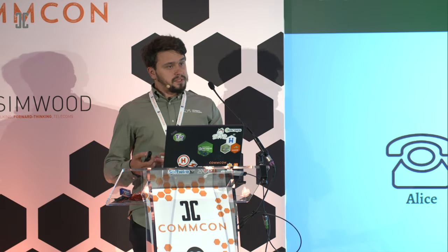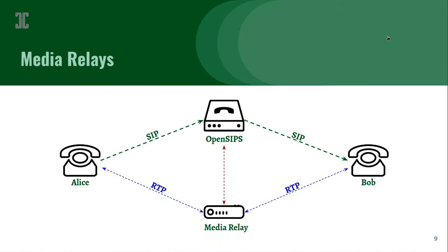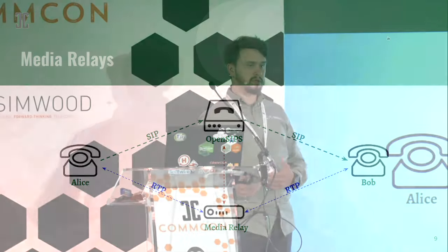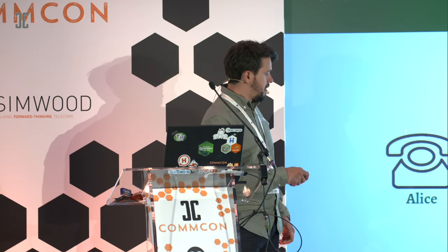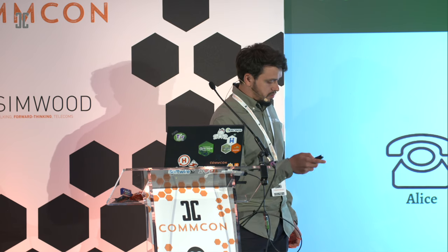But since OpenSIPS does not handle media — media usually goes end to end — we have to add some sort of hop inside the media path. These are called media relays. So in this setup, instead of RTP going directly from Alice to Bob, we add a media hop controlled by OpenSIPS. Whenever a call starts, OpenSIPS will also start an RTP session, and from that point RTP will always go through the media relay.